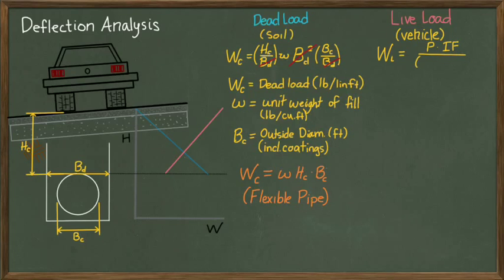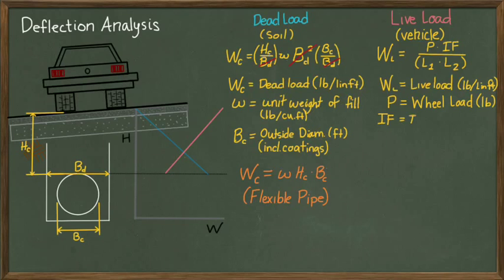The live load is determined from this equation, where Wc is the live load in pounds per linear foot of pipe, P is the specified wheel load in pounds, and IF is the impact factor, typically assumed to be 1.5. This accounts for the additional loading when the wheel hits the soil directly above the conduit.